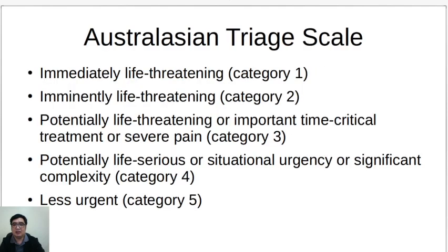This is the Australasian Triage Scale, and we have five categories. Category one is your immediately life-threatening cases. Category two would be your imminently life-threatening conditions. Category three would be your potentially life-threatening or important time-critical treatment or severe pain. Category four would be potentially life-serious or situational urgency or significant complexity. And category five is your less urgent cases.